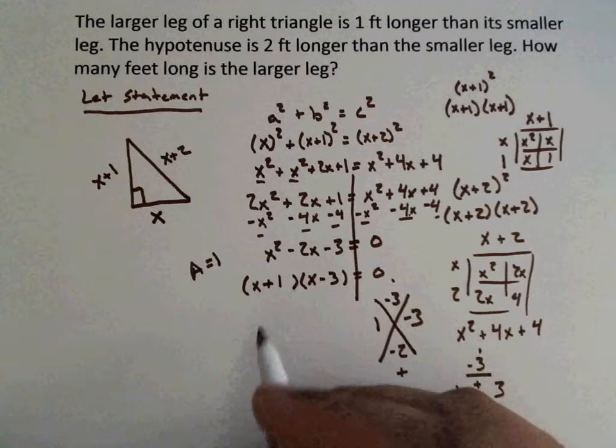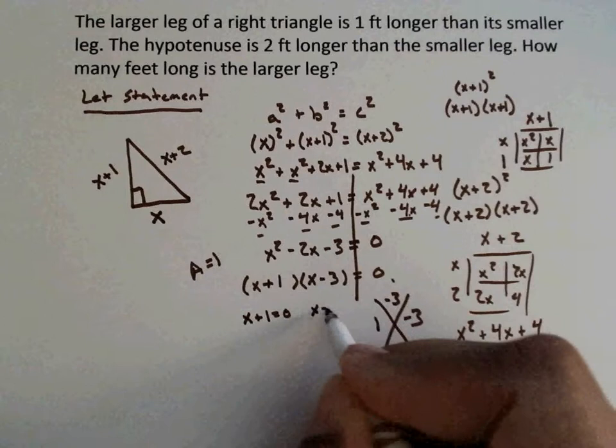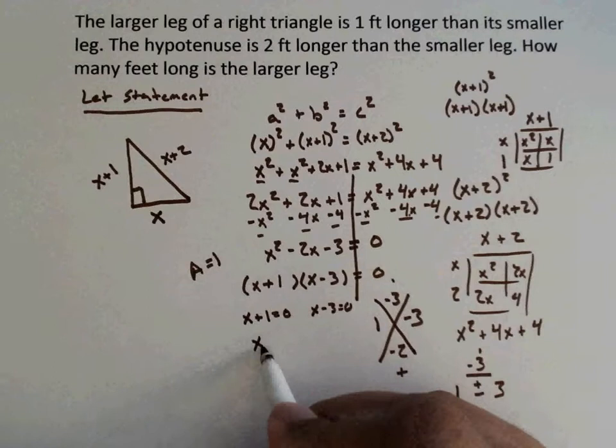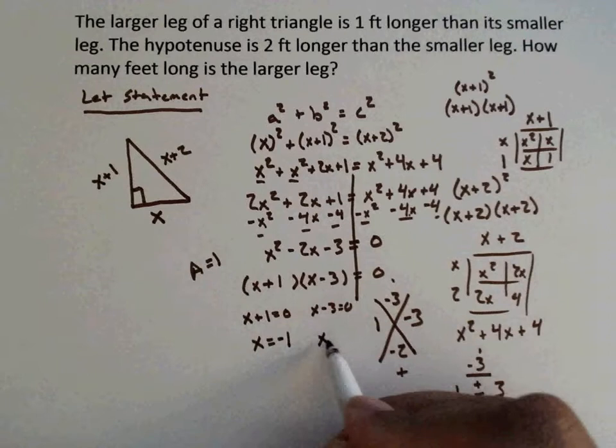I'm going to put my positive 1 and my negative 3 here. Then we set each one of these equal to 0. So we have X plus 1 equals 0, and we have X minus 3 equals 0. On this one, we subtract 1, so X equals negative 1. This one, we add 3 on both sides, so X equals 3.